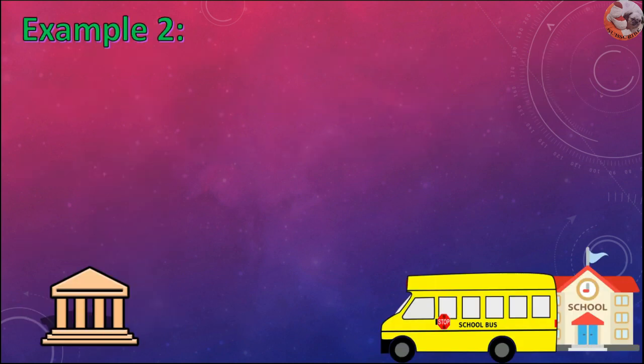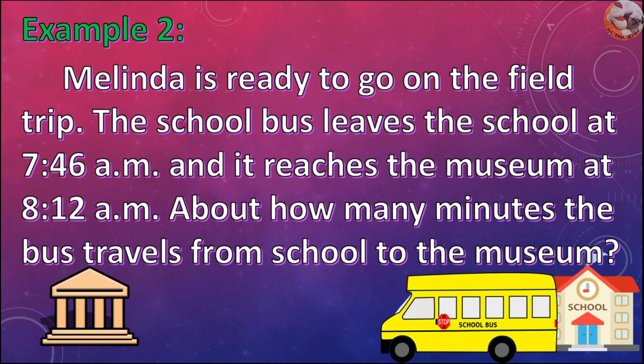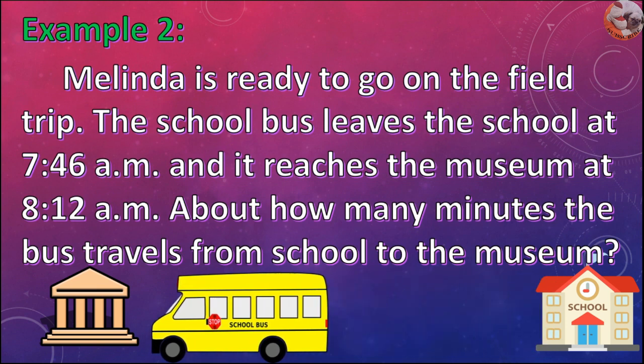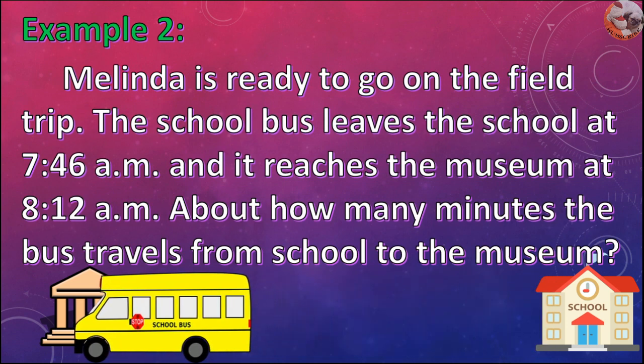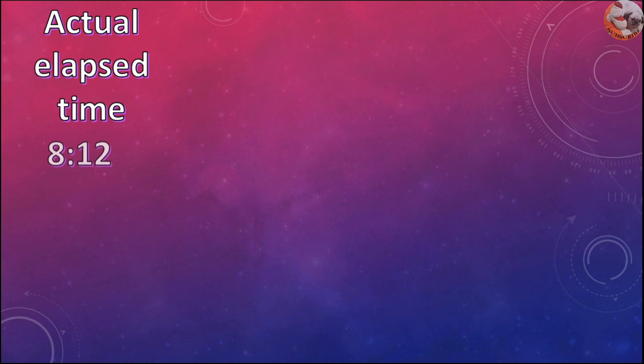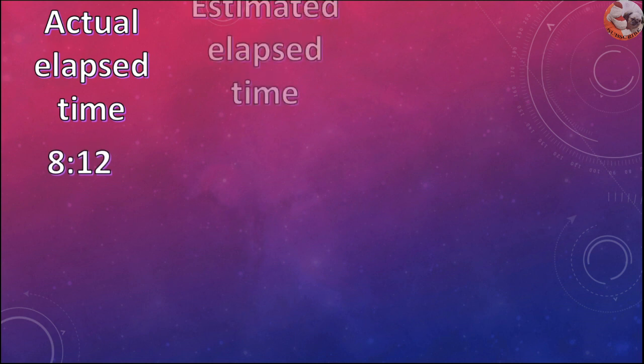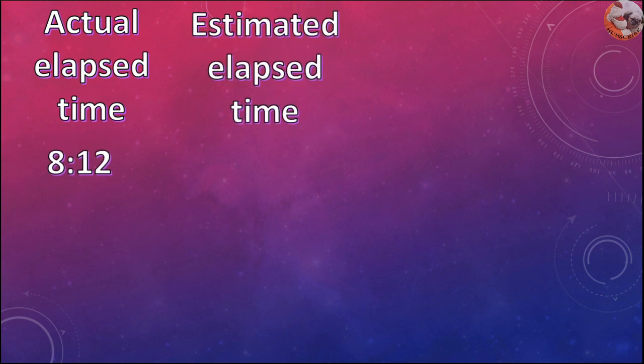Example 2: Melinda is ready to go on the field trip. The school bus leaves the school at 7:46am and it reaches the museum at 8:12am. About how many minutes does the bus travel from school to the museum? The actual elapsed time is 8:12. So the estimated elapsed time is 8:10.